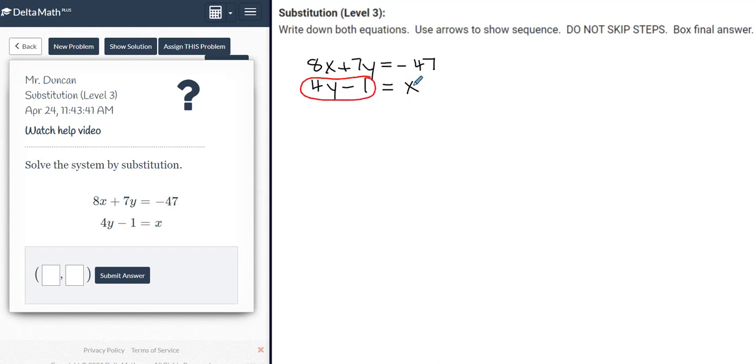This x is equal to that, which means I can take 4y minus 1 and I can substitute it in place of wherever the x is in the other equation.